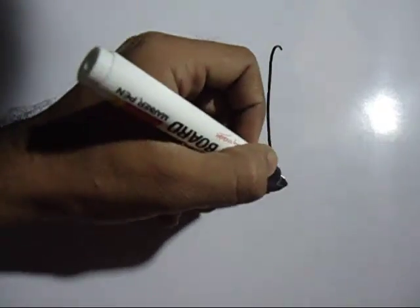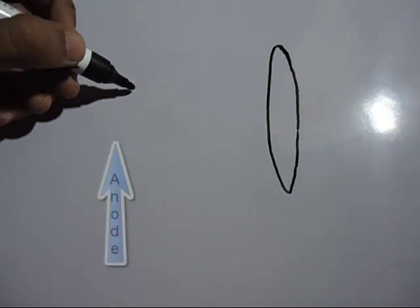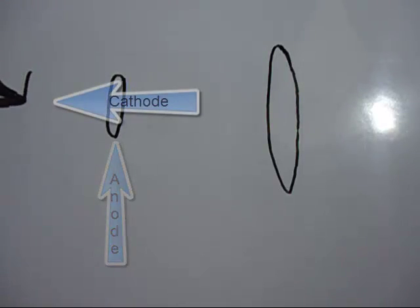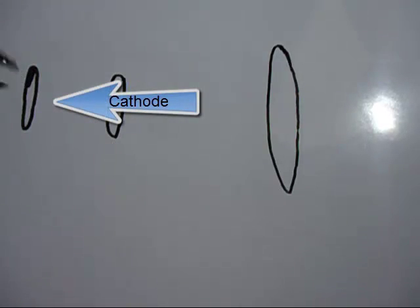But how was that possible? The only explanation was that there must be some rays coming from the cathode to the anode, completing the circuit. They named these mysterious rays as cathode rays.